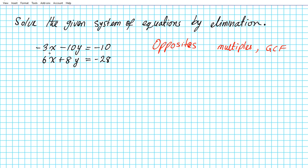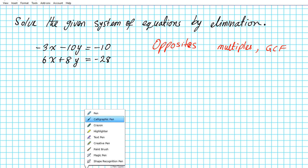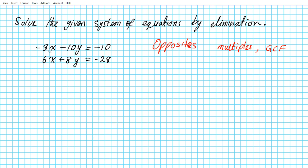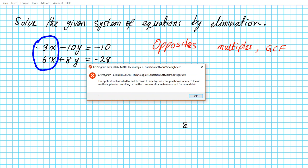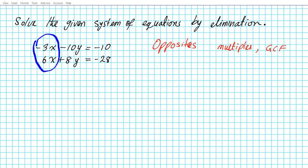Let's focus our attention on the x's first. Ask yourself: are these multiples of each other? We can see that the x coefficients are multiples of each other because when you multiply 3 by 2 you get 6. So we're going to use the multiples approach.